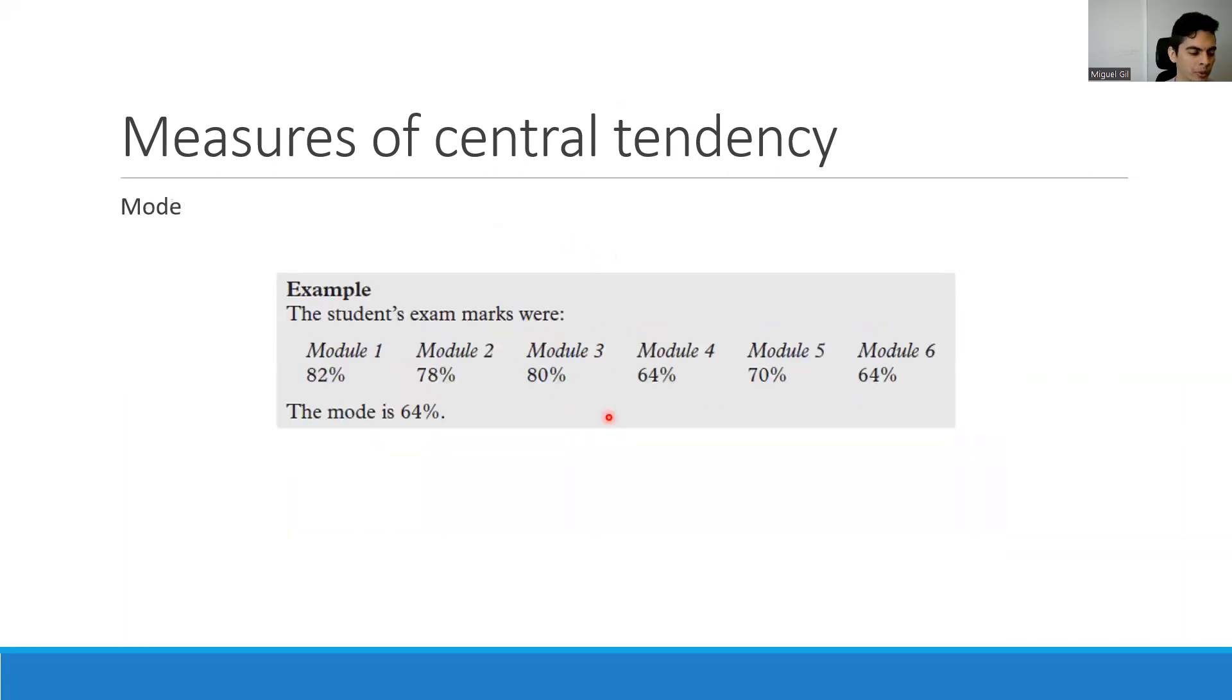And then we move to the mode. Mode is easier to explain in Spanish because in Spanish, the word for mode is moda, which is the same as fashion. Fashion is what most of the people is using, something that is popular. So it's the same thing in here. The mode, or the fashion if you want to use that name, is what is the thing that is most popular in here? What is the number that is the most popular number? So in this example, the most popular number is 64. So in this case, the mode is 64.